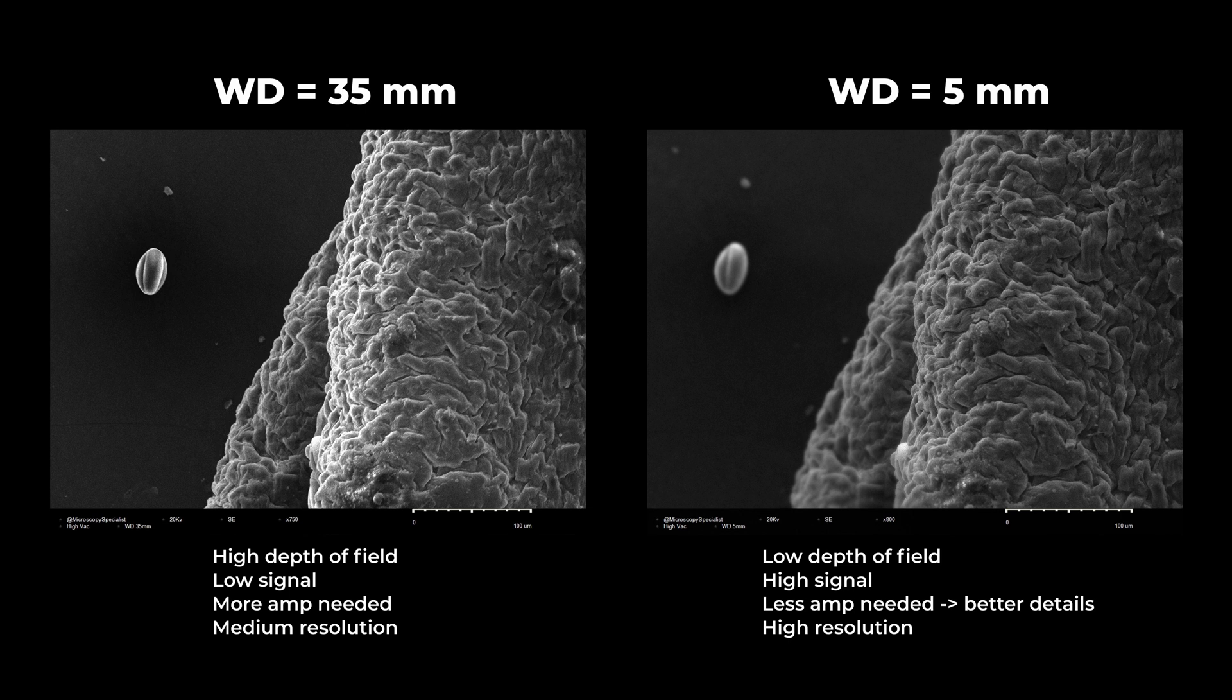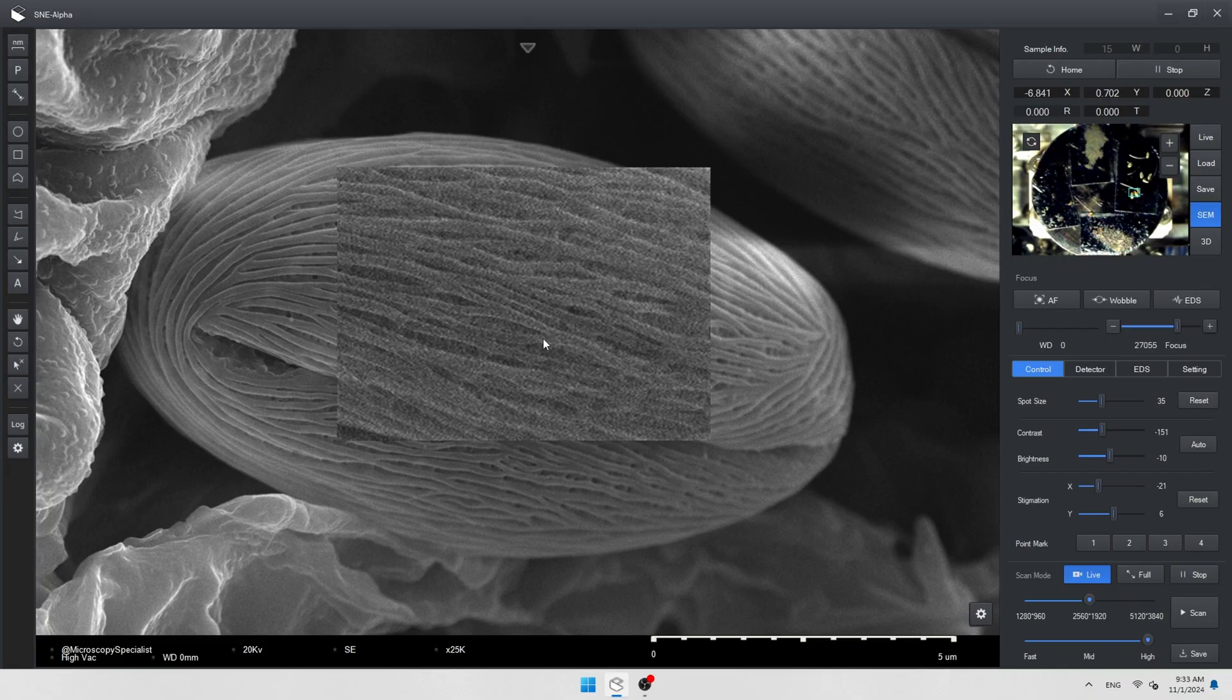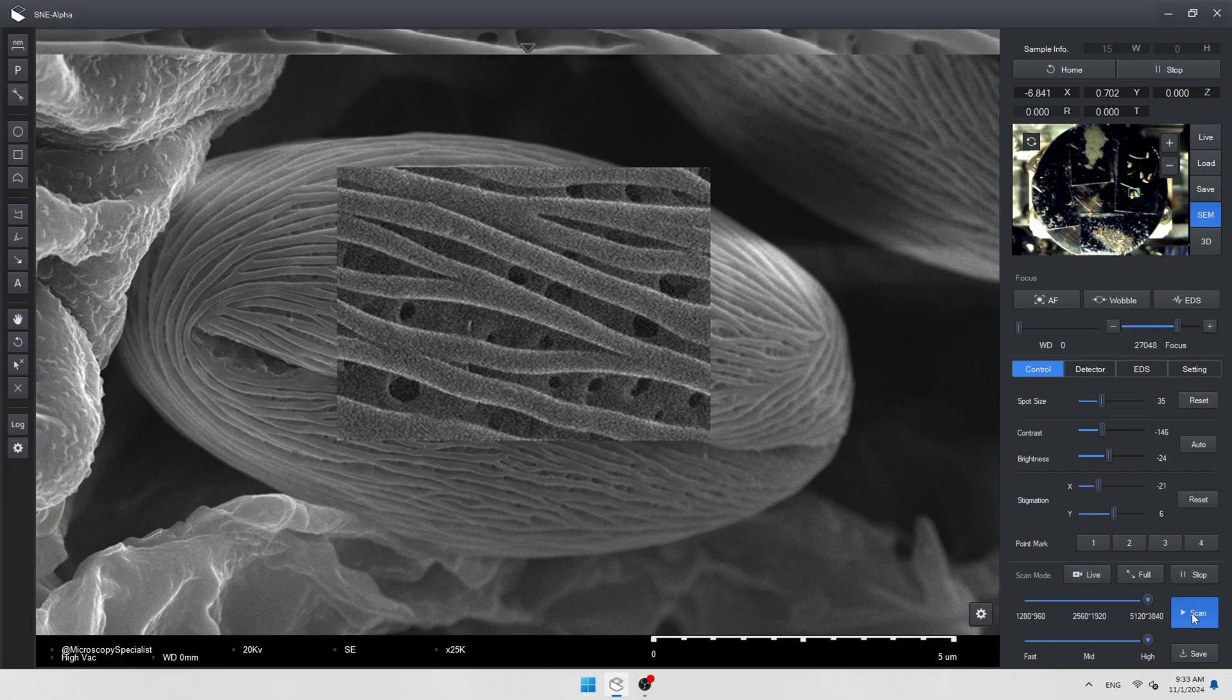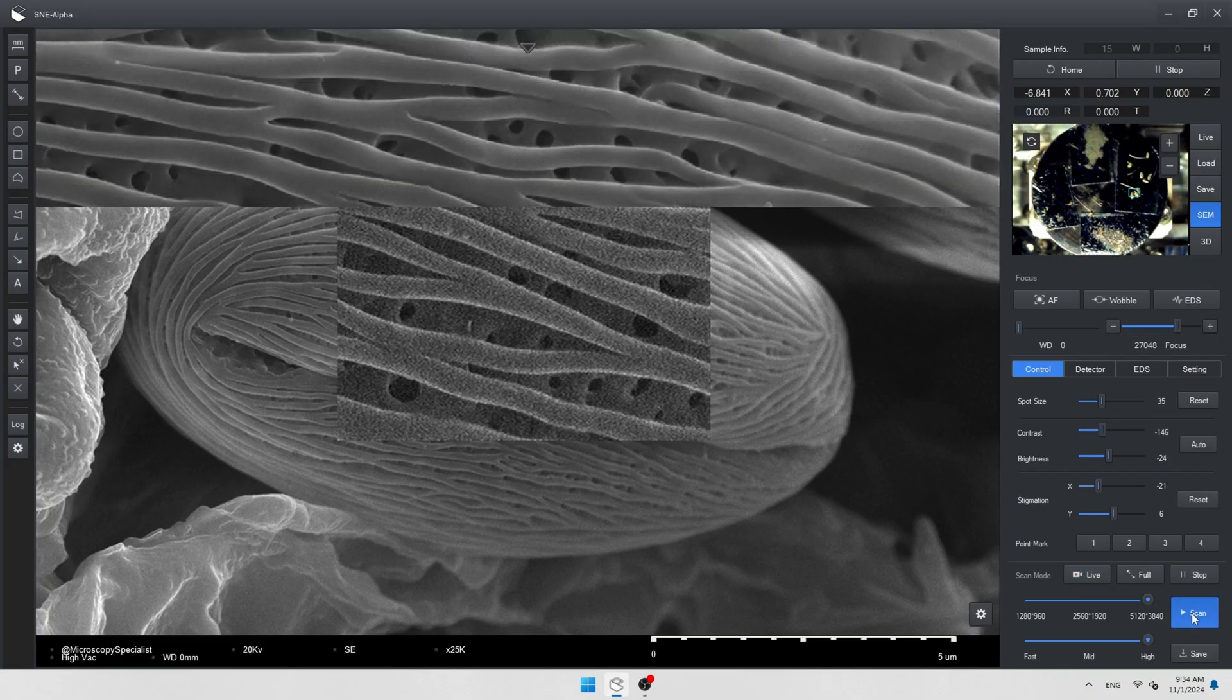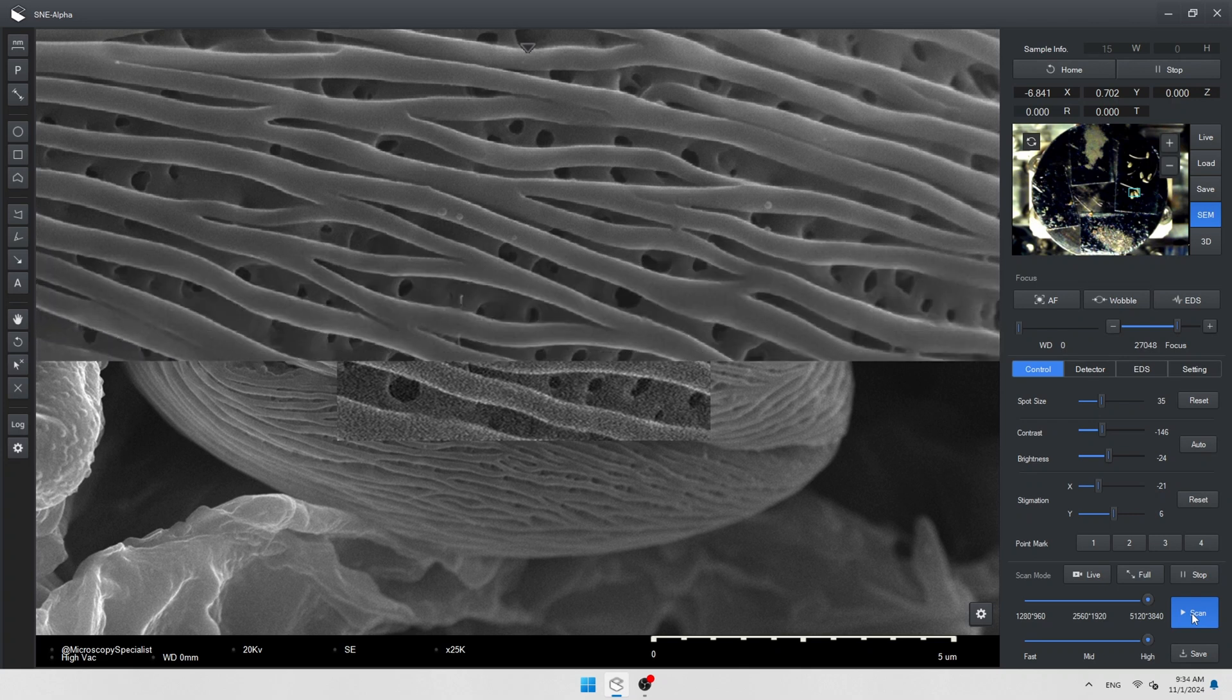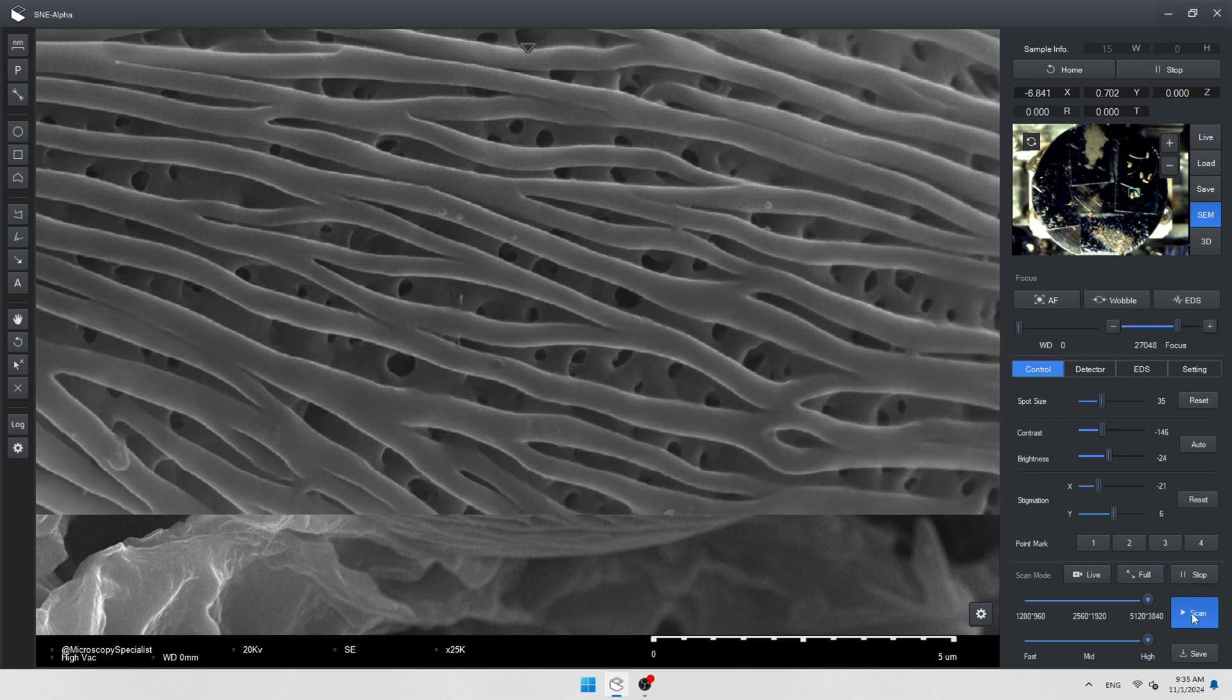As for the resolution, it decreases since the electron beam which travels a long distance will focus worse due to aberrations and environmental influences. Secondary electron collection and signal-to-noise ratio are also reduced. If you want to get the maximum resolution, be sure to check the manual of your microscope. Every microscope has an optimal working distance for high res images on high magnifications.